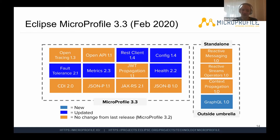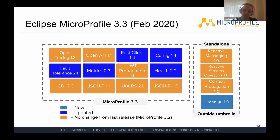On the project I'm on now we're doing exactly that — splitting a monolith with extensive Jakarta EE usage into microservices. As we do, we find we also need the MicroProfile-specific specs: fault tolerance, metrics, health, JWT propagation, and so on. Those eight upper specs are not part of Jakarta EE. When running on Kubernetes, you really want readiness probes and liveness probes to make sure your application is ready to receive traffic.